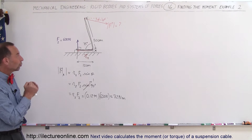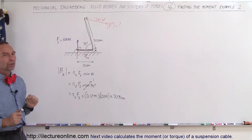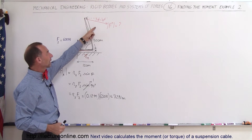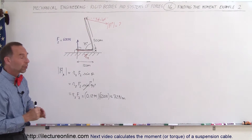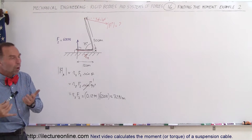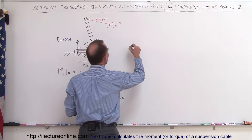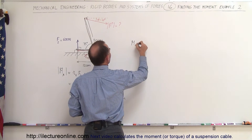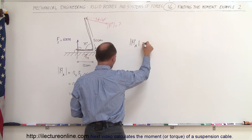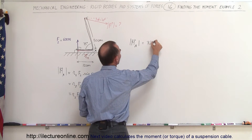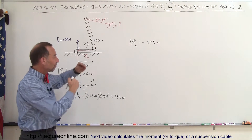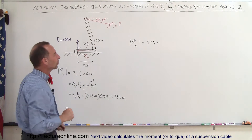How much force will be required when you pull at the very end of the crowbar to remove that nail? The moment at pivot point A must equal 72 Newton meters — the same amount required on the other side. But of course the moment arm is bigger, so less force will be required.